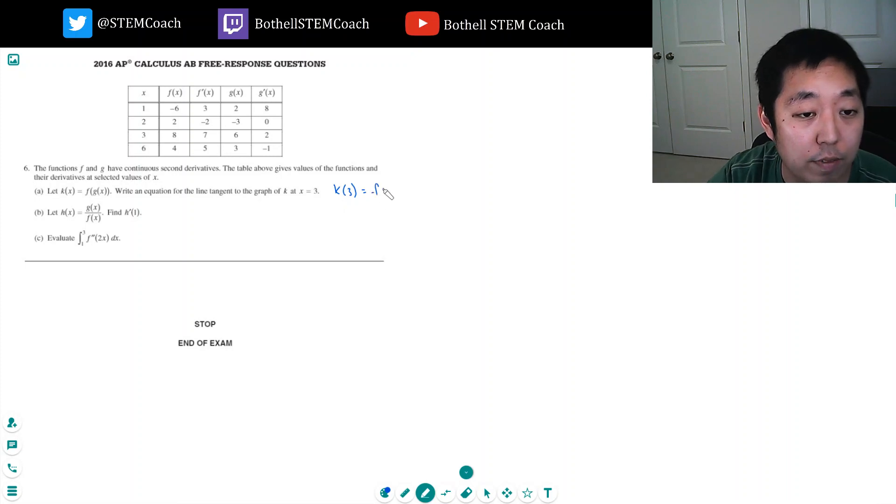To find the point I got to plug in 3 and that's f of g of 3. That's equal to f of, g of 3 is 6, so now I need f of 6. f of 6 is 4, so the point is (3, 4). I know my equation needs to look like y minus 4 equals m times x minus 3.